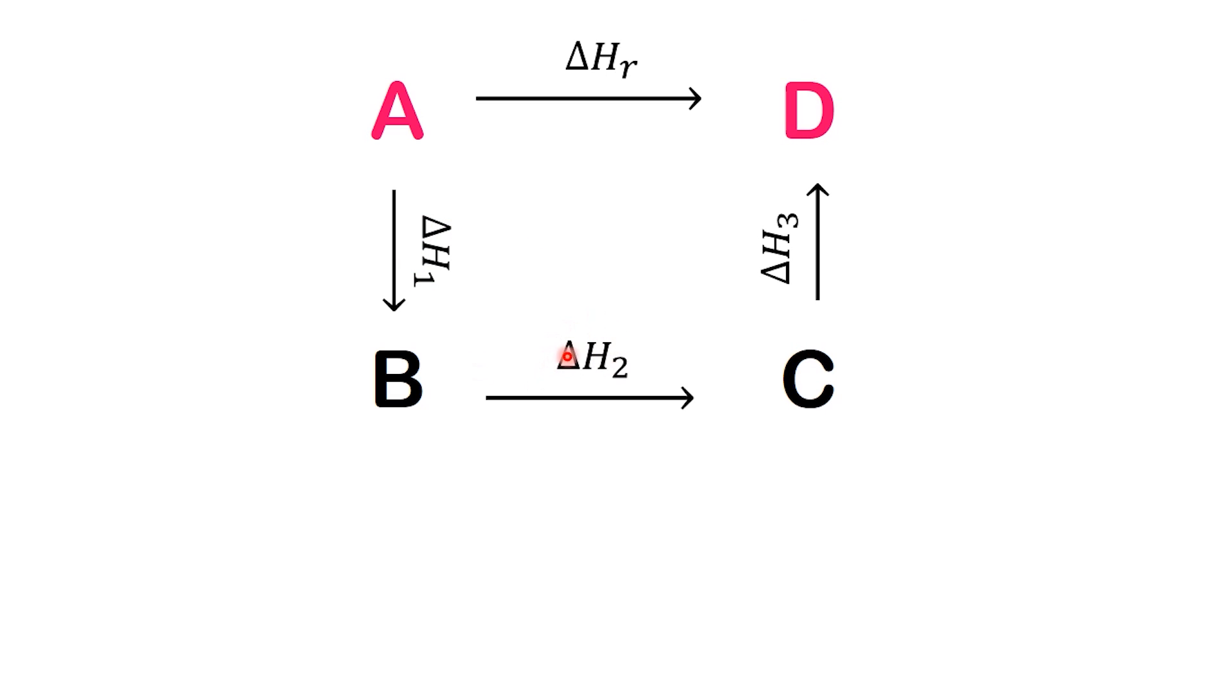We know the enthalpy change for each of these steps. According to Hess's Law, the total enthalpy change for A turning into D is simply the sum of the three steps. Delta H A to D equals delta H1 plus delta H2 plus delta H3.